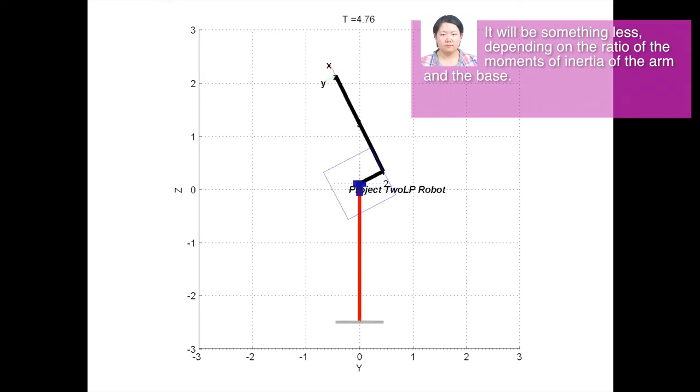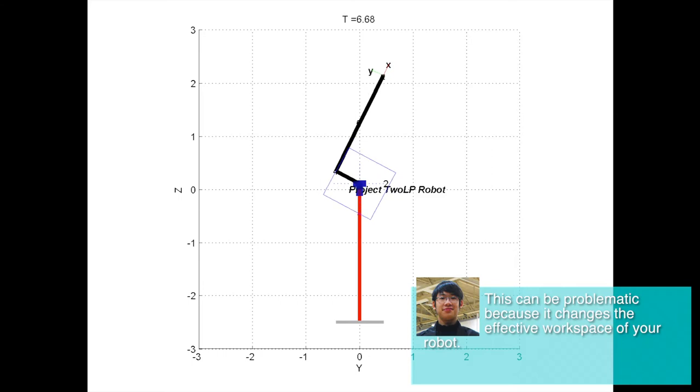depending on the ratio of the moment of inertia of the arm and the base. This can be problematic because it changes the effective workspace of your robot.